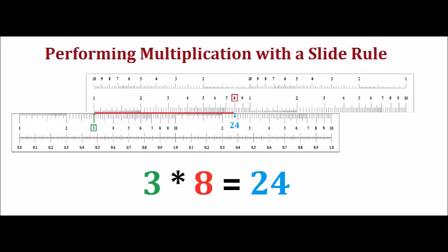The computation of 3 times 8 is very similar. Start at 3, boxed in green. The 1 on the top scale is already lined up, so move rightward to the 8, boxed in red.